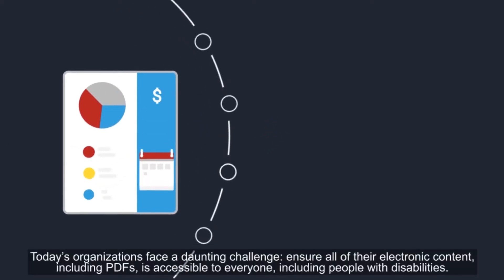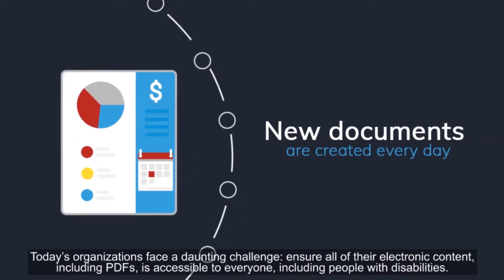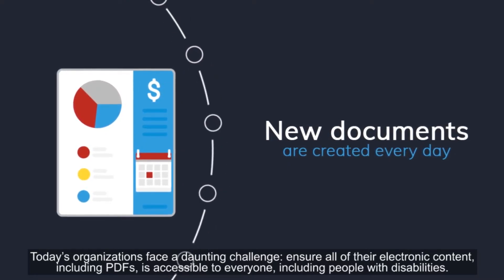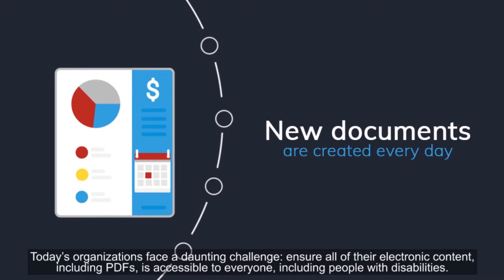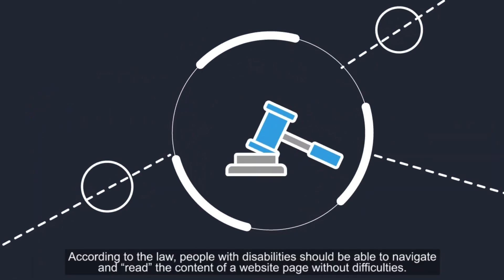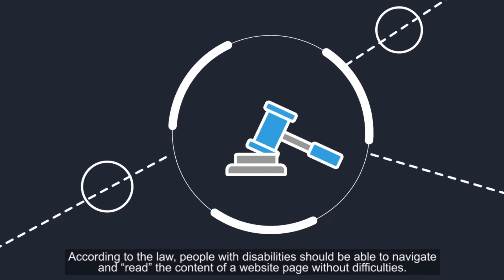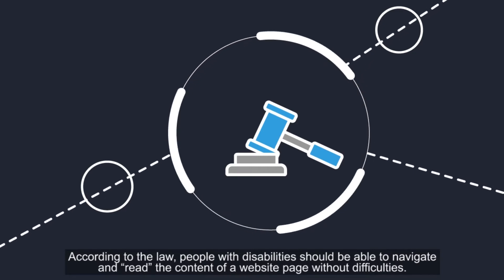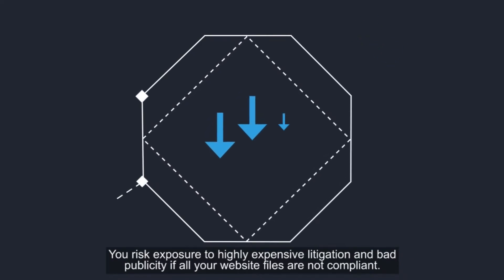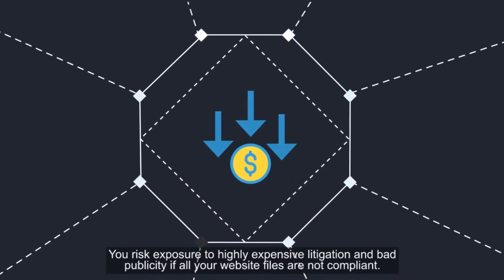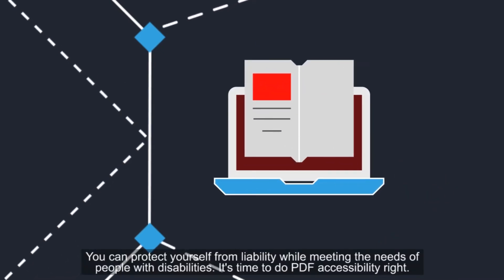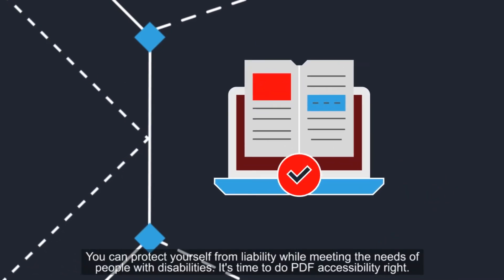Today's organizations face a daunting challenge: ensure all of their electronic content, including PDFs, is accessible to everyone, including people with disabilities. According to the law, people with disabilities should be able to navigate and read the content of a website page without difficulties. You risk exposure to highly expensive litigation and bad publicity if all your website files are not compliant. You can protect yourself from liability while meeting the needs of people with disabilities.